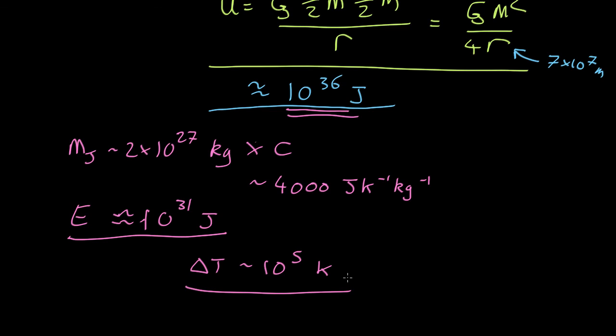So oodles of energy, plenty of energy by any estimation to make a planet very, very hot. It won't get that hot because as it's falling, energy will be radiated away. But there's clearly plenty of heat to go around, and you'd expect newborn giant planets to be extremely hot.